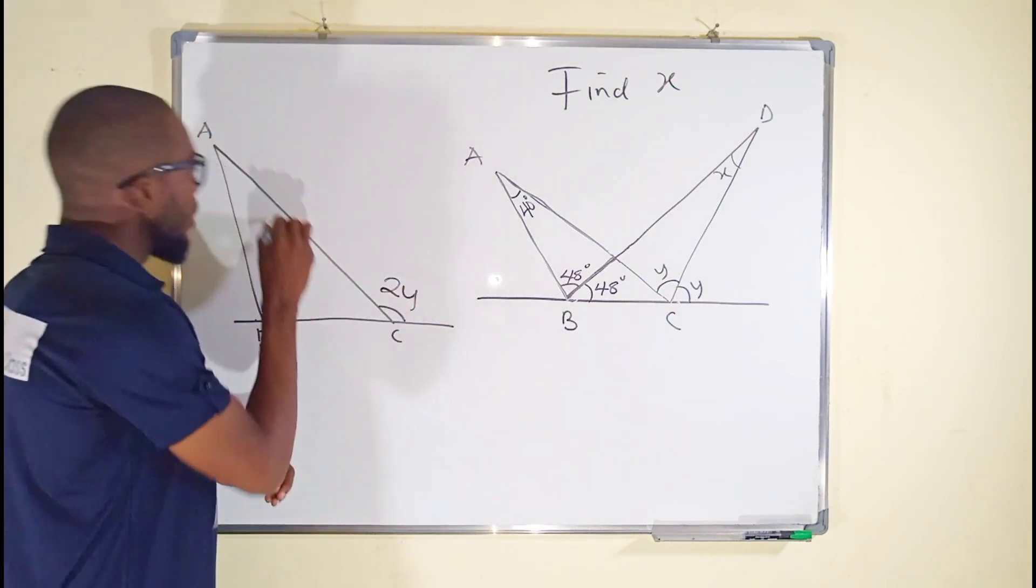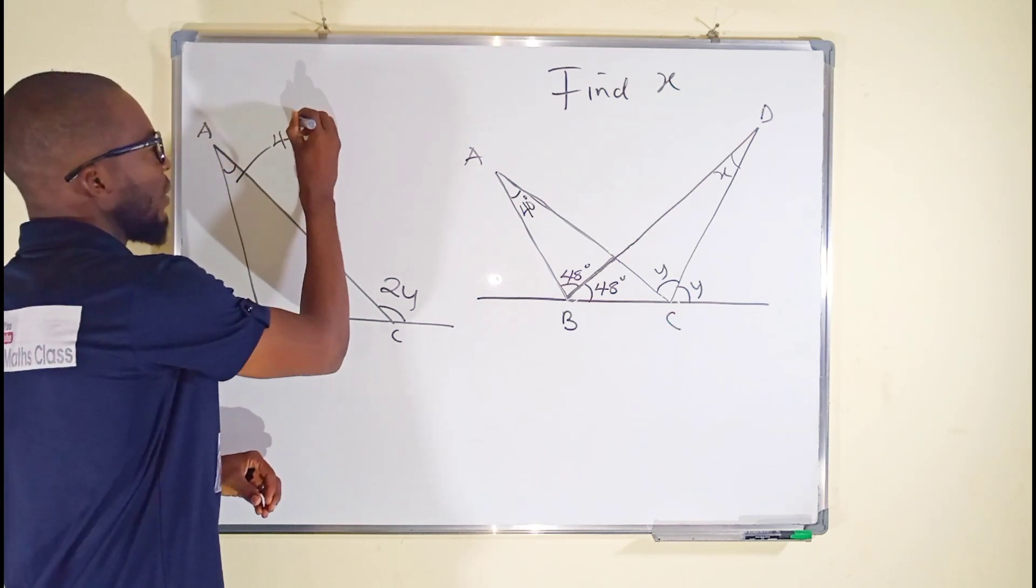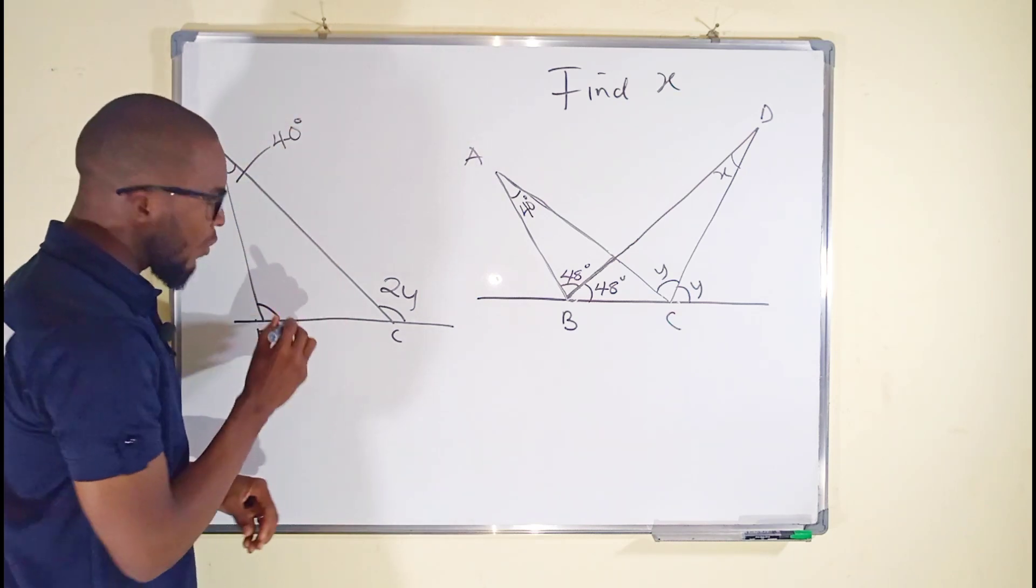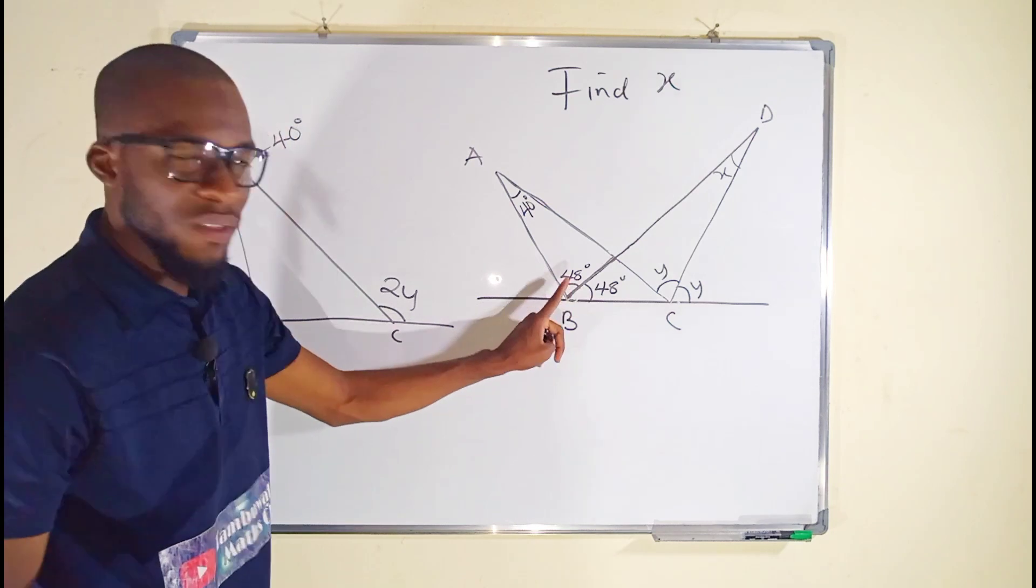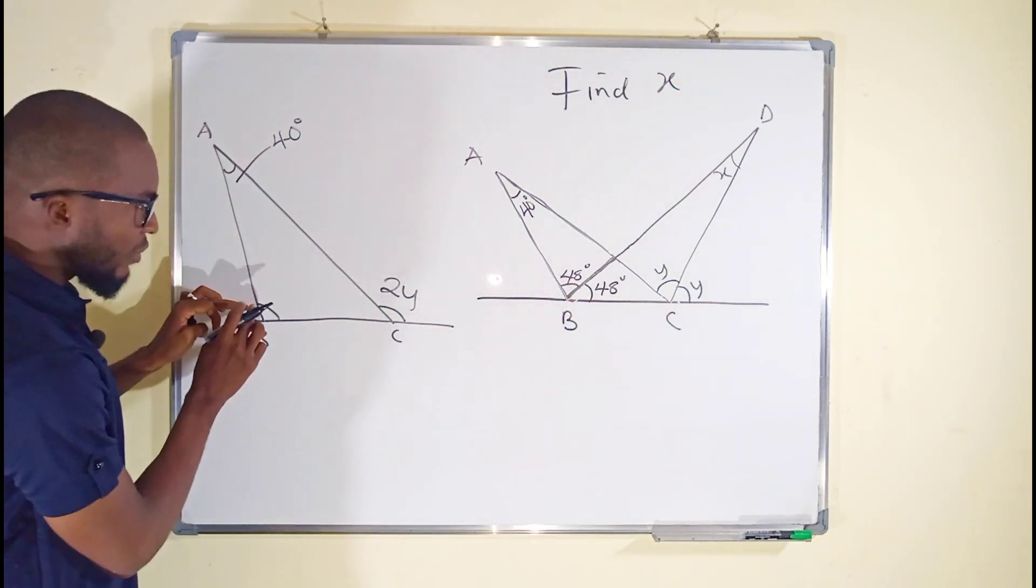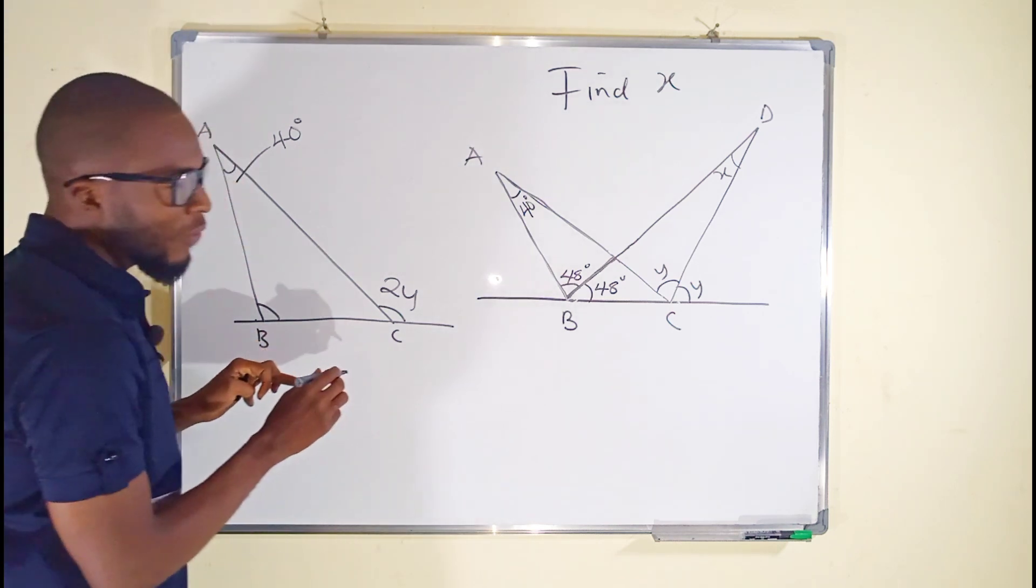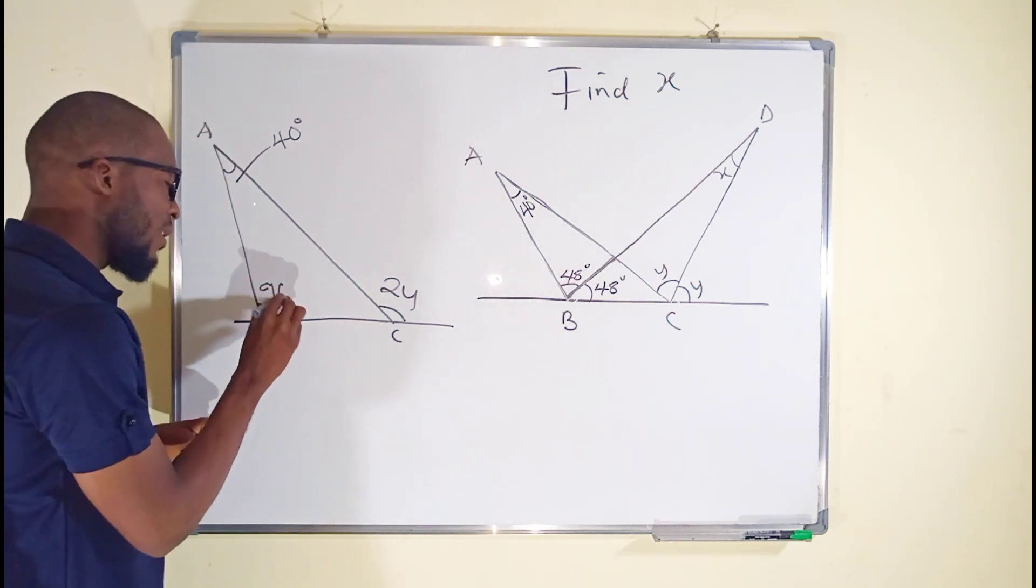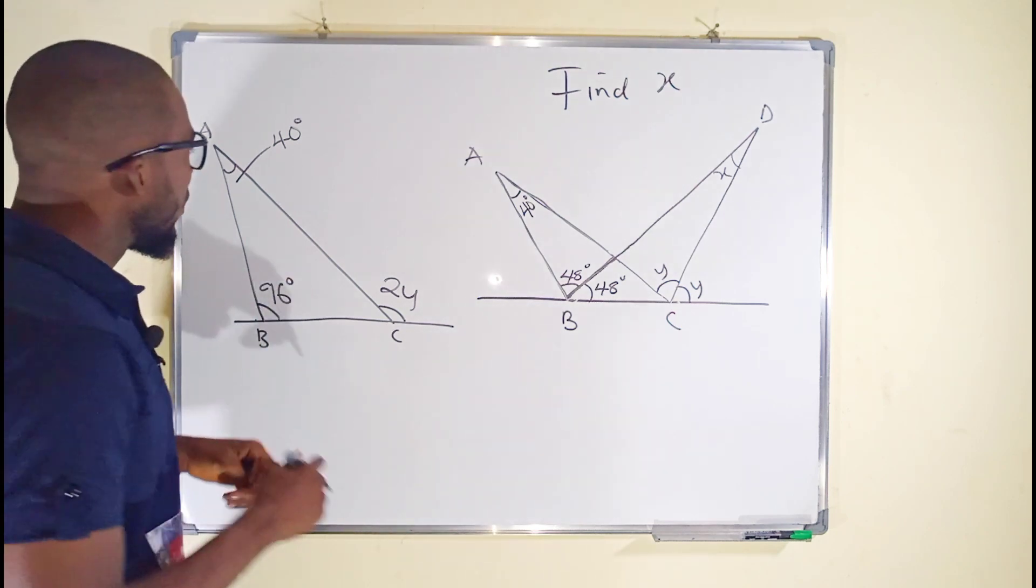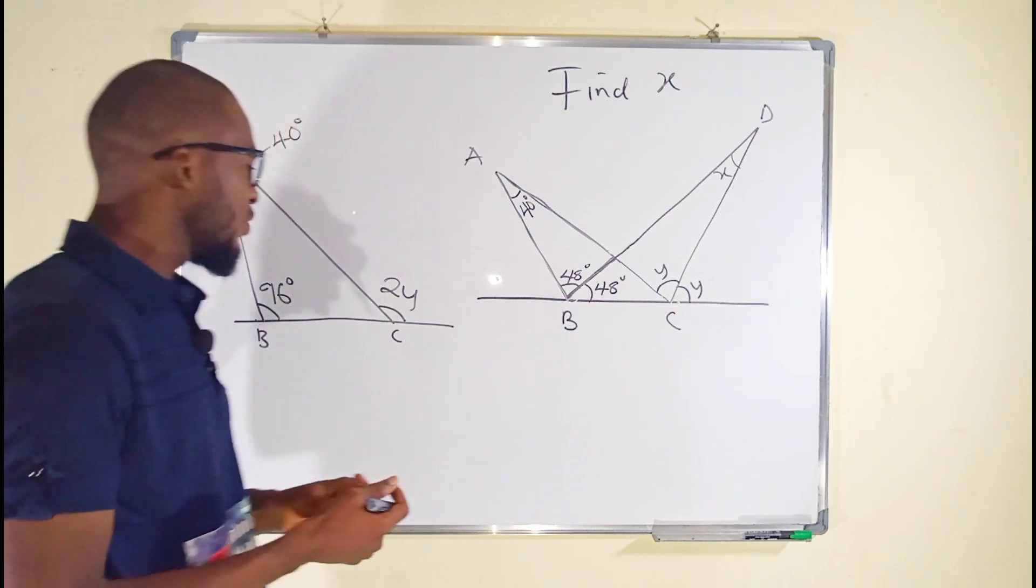This angle here from the question is 40 degrees, and this other one is the combination of these two. You can see we have this 48 and this 48 that comprises of this angle right here. If you join them together you obtain 96 degrees. It is one of the laws of a triangle that the exterior angle of a triangle is equal to the sum of the interior opposite angles.